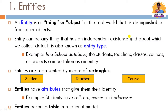Entities are about which we collect data. For example, if we take a school database, we will find students, teachers, classes, and courses — all of these are entities which we can identify. We represent entities in a rectangle form in the ER diagram — student, teacher, and courses are shown in a rectangle box.